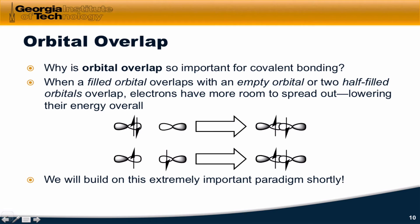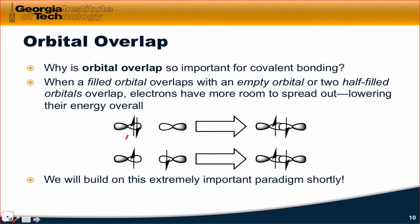This idea of orbital overlap is really important to understand for all modern bonding theories. Let's imagine two atoms coming together, let's call them A and B. Let's say that A is an atom that has two electrons within a p orbital — this could be something like carbon. Within carbon's electron configuration we've got 2px², 2py¹, and 2pz¹. So ignoring the py and pz orbitals, if we think of this as the 2px orbital of carbon, it has two electrons within it.